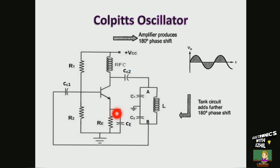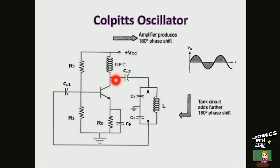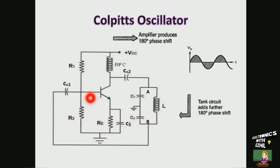CE is the emitter bypass capacitor which is used to avoid negative feedback given to the circuit. CC1 and CC2 are the coupling capacitors. CC2 is used to couple the output of the transistor amplifier to the feedback network, whereas CC1 is used to couple the feedback signal to the input of the transistor amplifier.